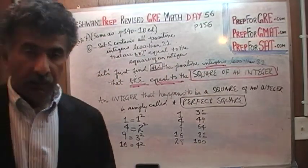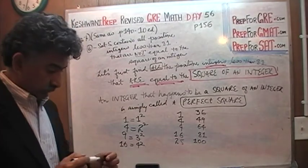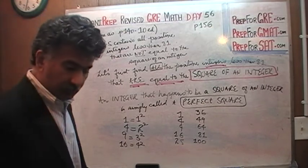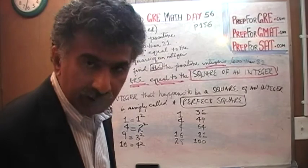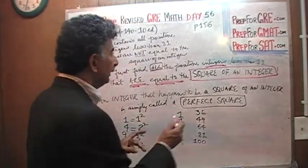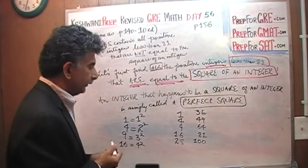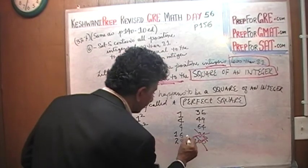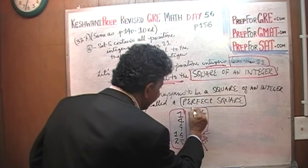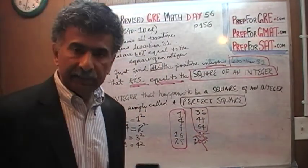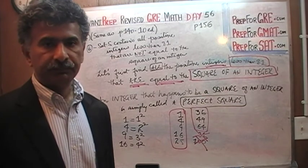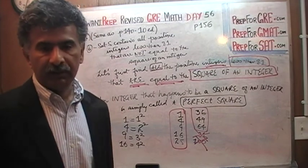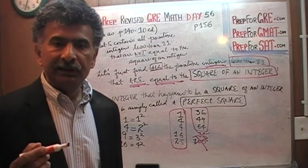Obviously there are 10 perfect squares if we go up to 100 — 1 squared, 2 squared, 3 squared, and so forth up to 10 squared. But we are looking for positive integers that are less than 81. If they have to be less than 81, then 81 does not count and 100 does not count. There are 8 of them — 8 positive integers less than 81 that happen to be perfect squares.